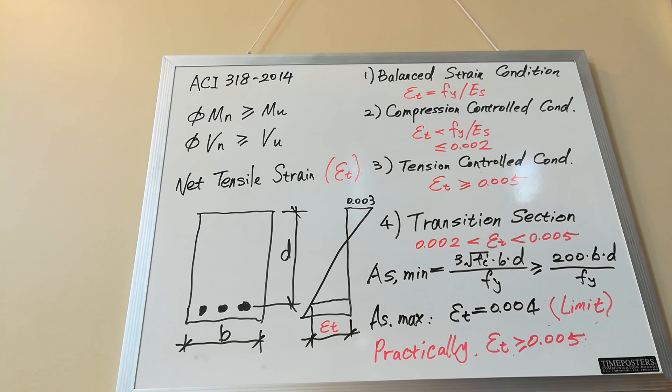According to ACI, a section is considered as compression-controlled when epsilon t is less than 0.002.